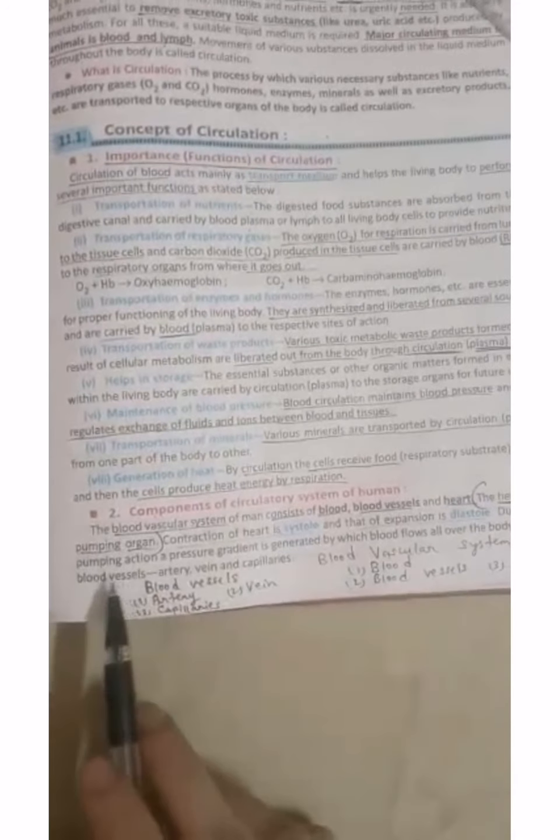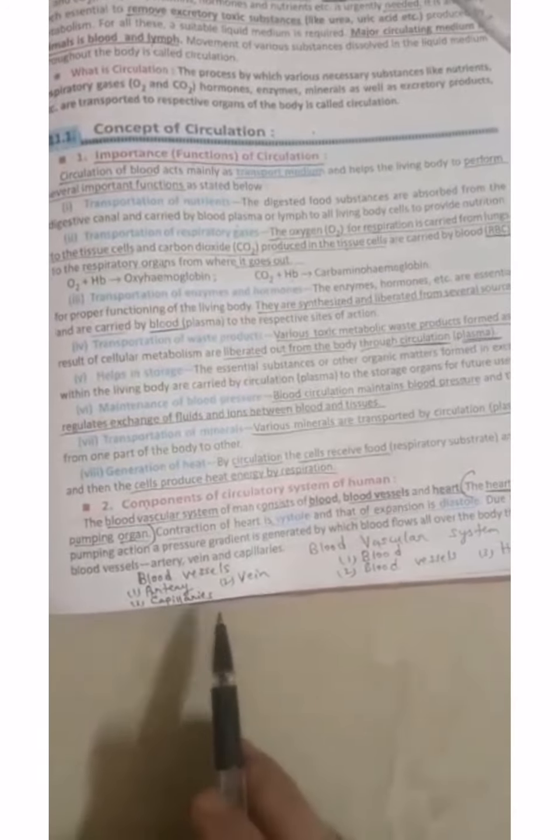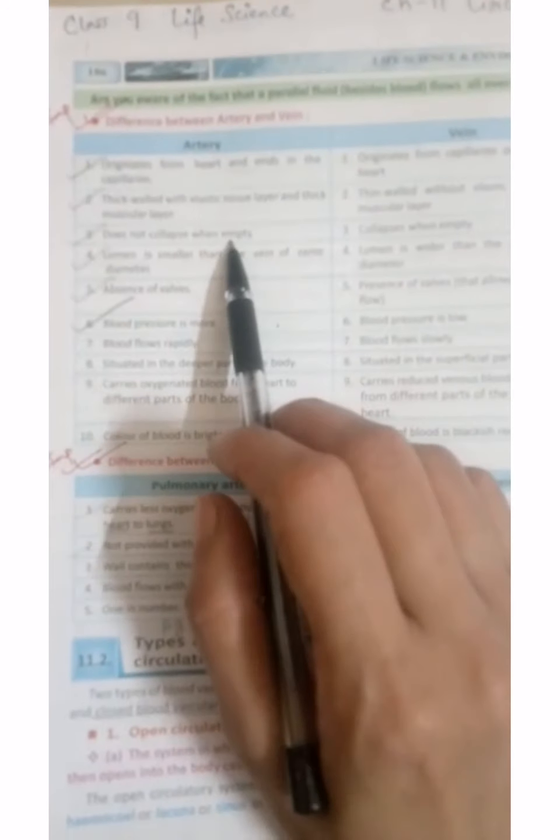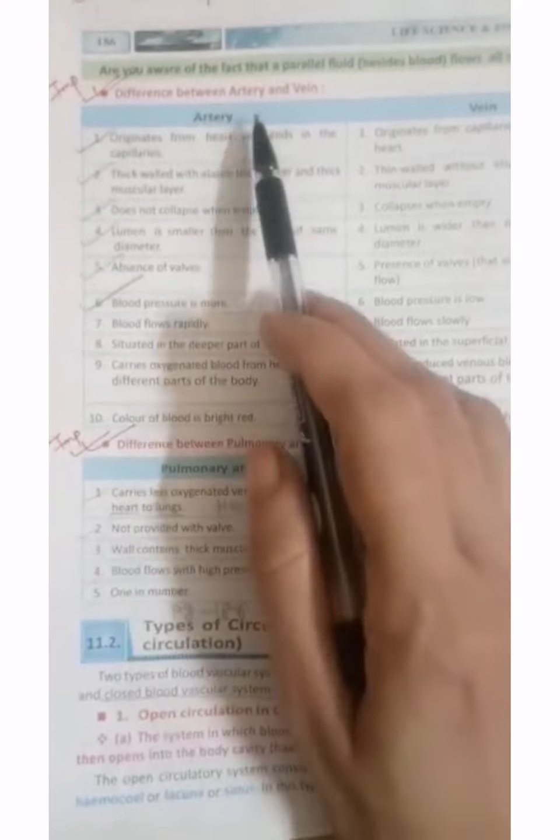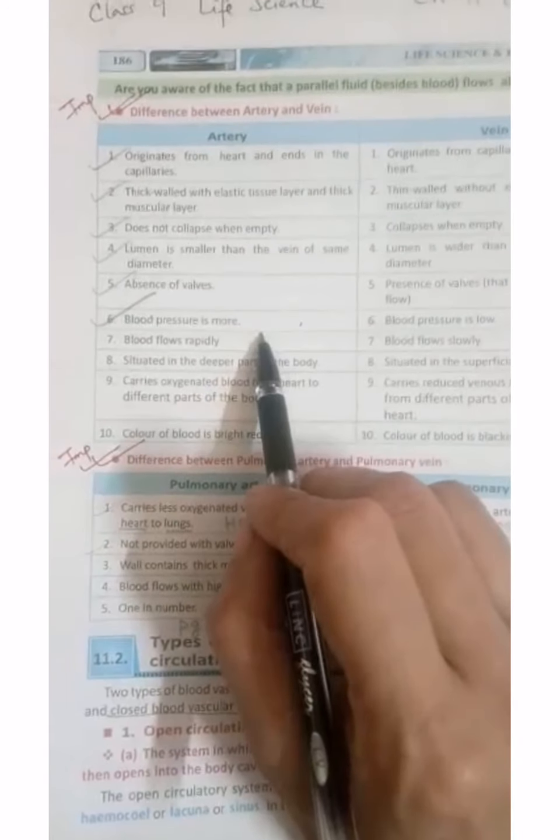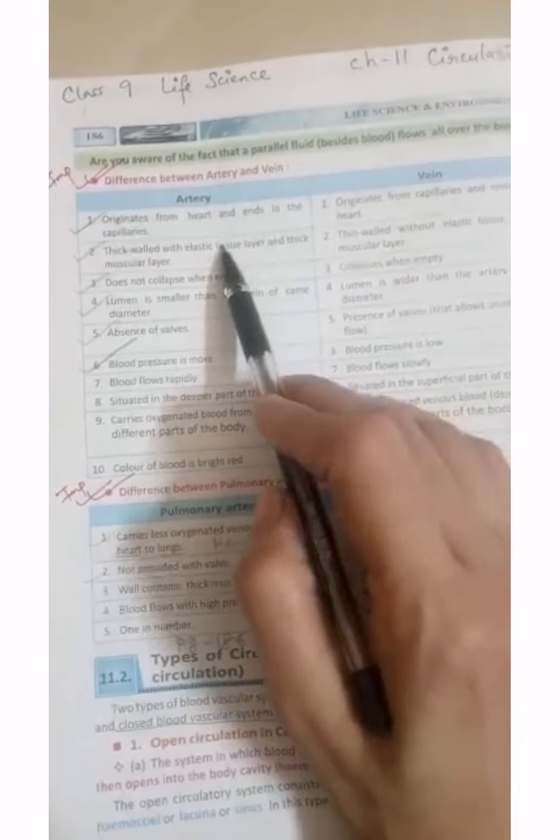And through three blood vessels: artery, vein and capillaries. Now come to the next page. See here the differences are given. The differences between artery and vein are written here. Learn all the six points here.